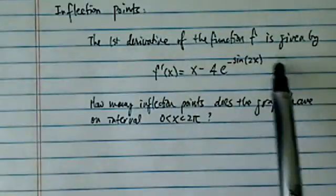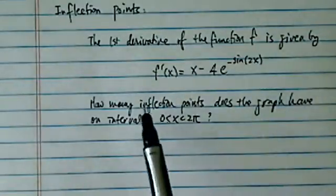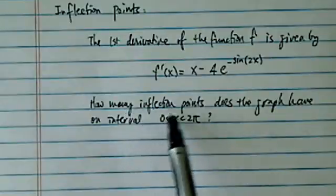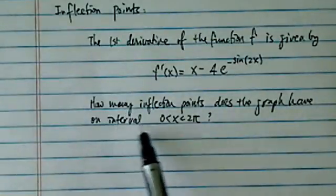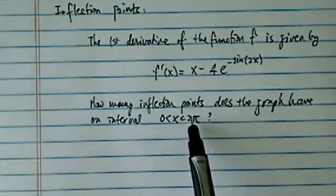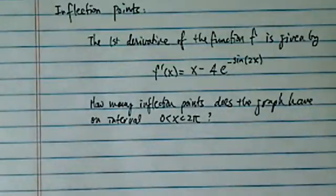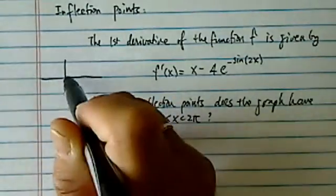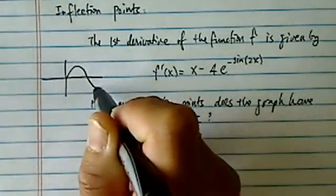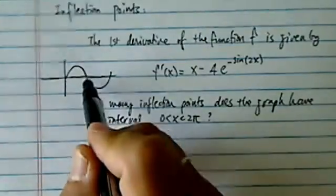We're given the first derivative of a function f, and we're asked to find how many inflection points the graph has in the interval 0 < x < 2π. An inflection point is just a fancy word for when the cup goes from full to empty, or vice versa.